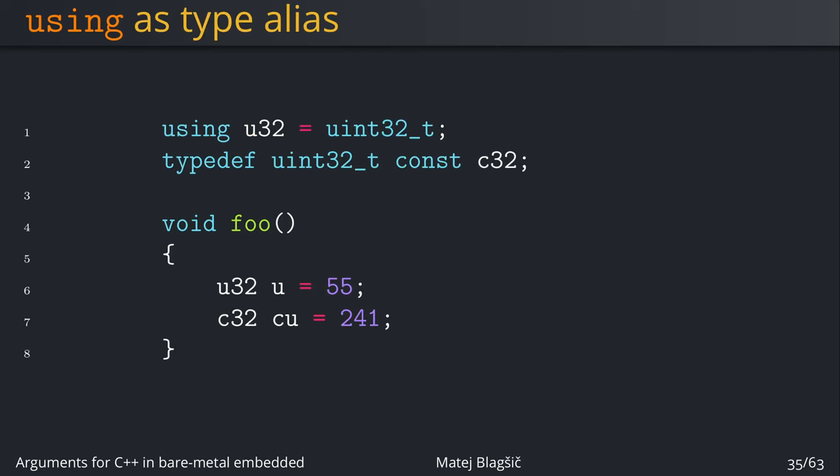So what are type aliases? Let's say we want to have our own type called C32 for a constant 32-bit type, and we can use typedef in which the last word is the new name but everything before it is the type of this new name. In this case, uint32_t const is the C32.